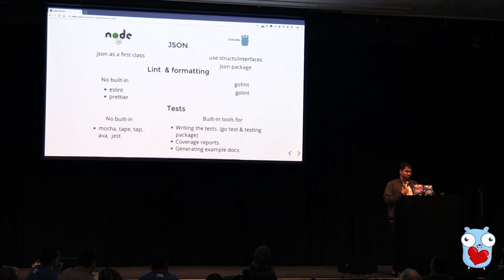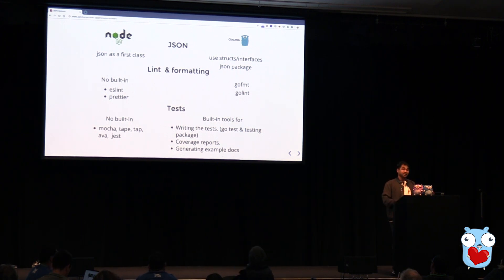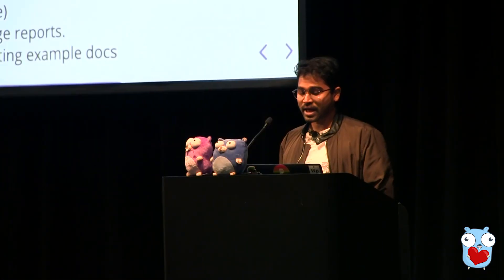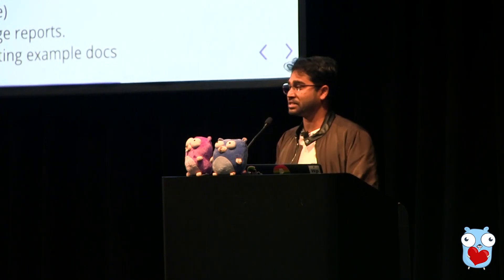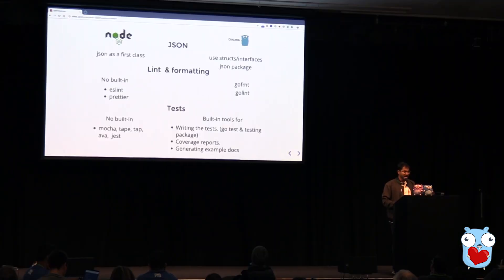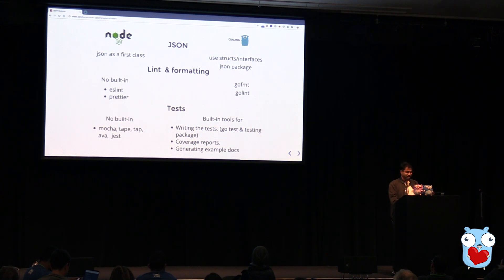Another thing I like about Go is testing. In Node.js, there are no built-in testing tools — you rely on external libraries like Mocha, Tape, or Jest. But in Go, we have the go test tool and the testing package built natively into the language. It also creates coverage reports for you, and you can generate docs from it as well. These things are simply not present in Node.js.